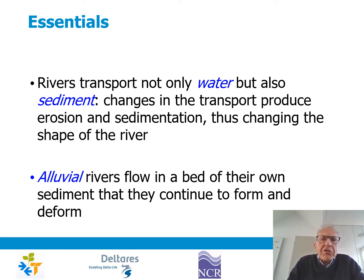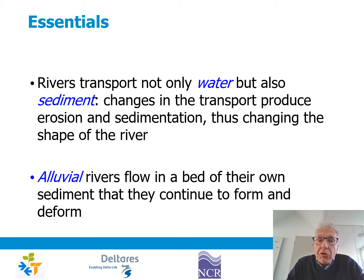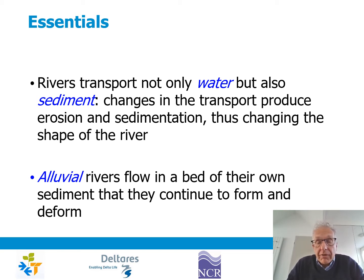What is essential to understand is that rivers transport not only water, which is the most visible part, but also sediment. And changes in the transport of this sediment produce erosion and sedimentation, and that is what changes the shape of the river.